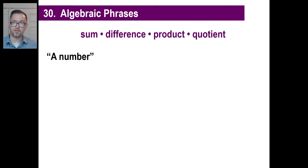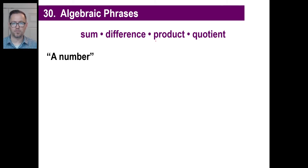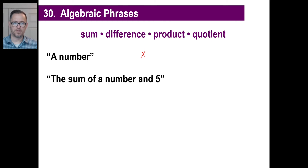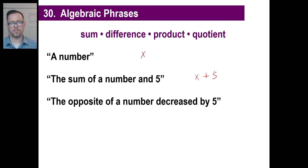Let's practice a couple of these. When you see 'a number,' you just write something like X, or N, or whatever letter you'd like to use. The sum of a number and five — well, we have a number, and the sum of that and five means we're going to add a number with five. So we write X plus 5.